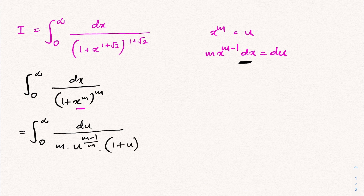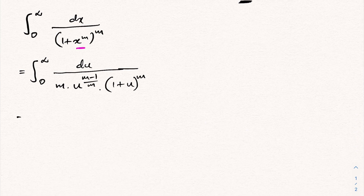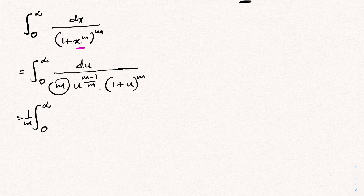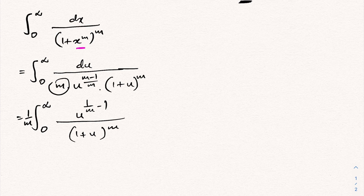After substitution and simplification, pulling the constant 1/m outside the integral, the integral becomes (1/m) times the integral from zero to infinity of u^(1/m − 1) over (1 + u)^m du.